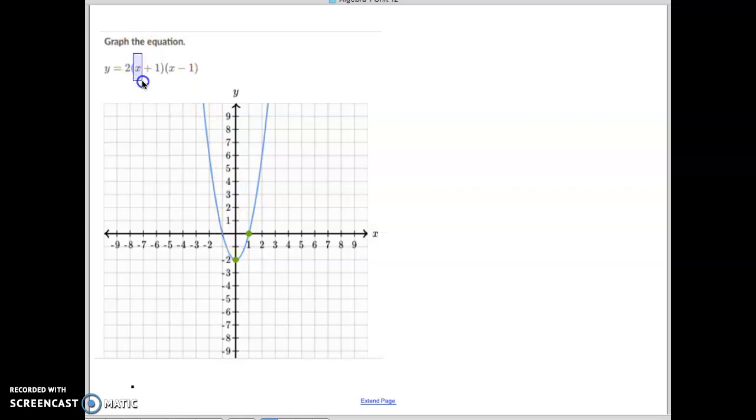So I'm going to plug zero in for x. Zero plus one is one. Zero minus one is negative one. One times negative one is negative one. Negative one times two is negative two. So my y-intercept or my vertex is at zero negative two. Put that in there. And that's all there is to it.